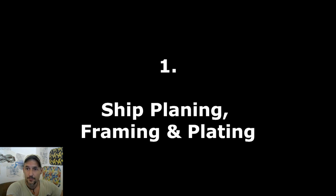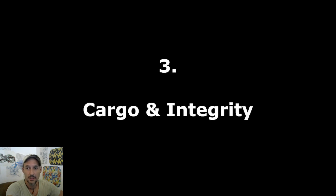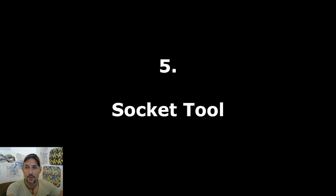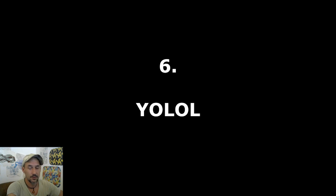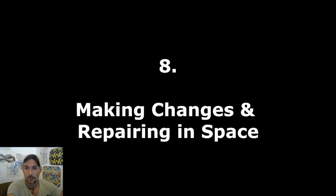Number one will be ship planning and framing and plating. Number two will be angle shapes. Number three will be cargo and ship integrity. Number four will be cables, pipes, and networking. Number five will be the socket tool. Number six will be YOLOL, the programming language. Number seven will be testing and analysis — analyzing your ship and finding out what the problems are. And number eight will be making changes and repairing in space.